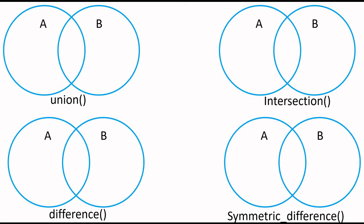There are four methods used in set operations. In union, all the elements of both the sets are returned and no duplicate is allowed. In intersection, the common elements among both the sets are returned. In difference, only the uncommon elements of the first main set are returned. And in symmetric difference, uncommon elements of both the sets are returned.